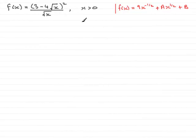In this part of the question, we're asked to show that f(x) which equals (3 - 4√x)² divided by √x, where x is greater than 0, can be expressed as f(x) = 9x^(-1/2) + Ax^(1/2) + B, where A and B are constants to be found.